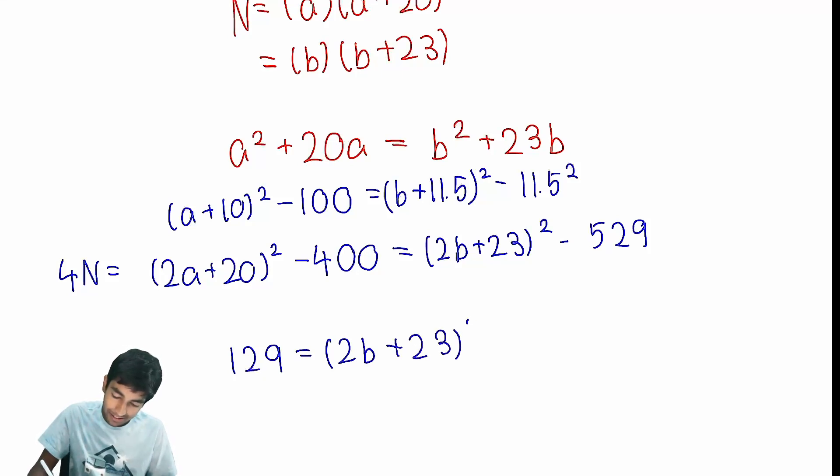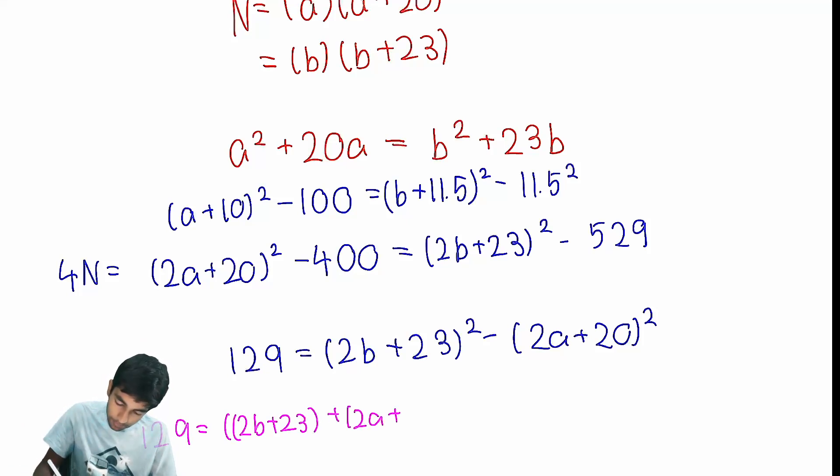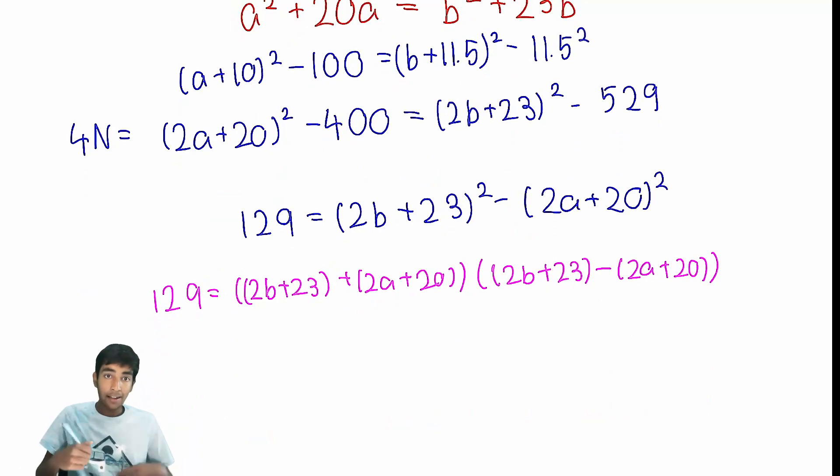And take a look, this is just difference of squares, our best friend in terms of Diophantine equations. Because now, we can just factor this. We get 129 equals 2B plus 23 plus 2A plus 20, and then 2B plus 23 minus 2A plus 20. So now, 129 has prime factorization, 3 and 43, so there's very few possibilities to check.